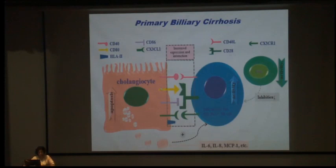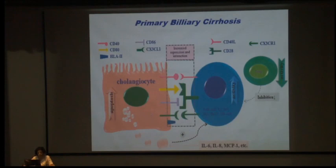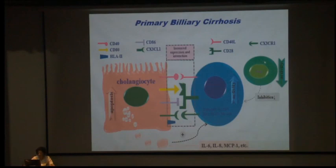In PBC, cholangiocytes themselves act as APCs because they express CD40, CD80 — co-stimulation markers — and have increased HLA class II expression. Through this co-stimulation they interact with T cells, which become effector T cells, cytotoxic cells, TH2, and TH17 producing IL-17. On top of that, cholangiocytes respond to IL-6, IL-8, and MCP-1, becoming further activated. Hepatocytes also act as APCs but the cholangiocyte contribution is greater. In both PBC and AIH, regulatory T cell inhibition is low.